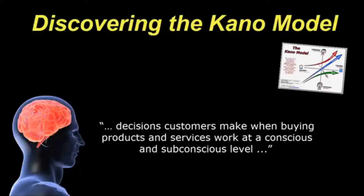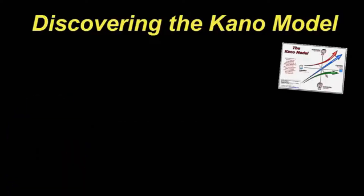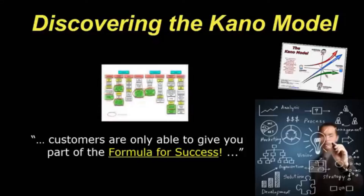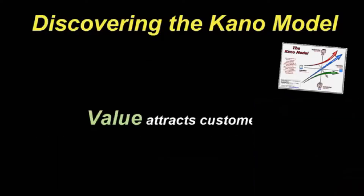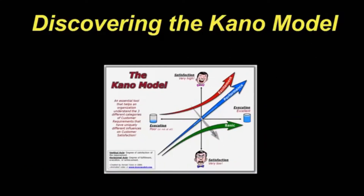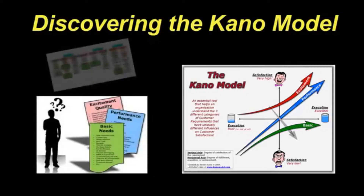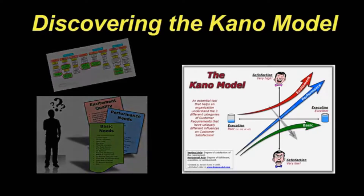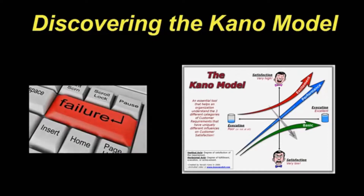The point here is simple: customers are only able to give you part of the formula for success. So how can we gather all the necessary requirements to consistently design winning products and services that deliver on value, quality, and innovation? Part of the answer lies in a model developed by Japan's professor Noriaki Kano. His model describes three distinct and unique types of customer needs that occur at a conscious and subconscious level. If we miss any of these, we'll likely end up with a lukewarm offering that's not very competitive or profitable.